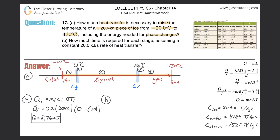Part B is the phase change from solid to liquid. We use q_fusion = m × L_F. The mass is 0.2 kg, and the latent heat of fusion is 334 kilojoules per kilogram — be careful to convert to joules. So: 0.2 × 334 × 10³ = 66,800 joules.